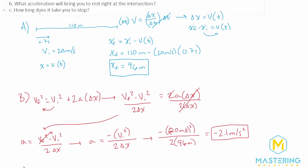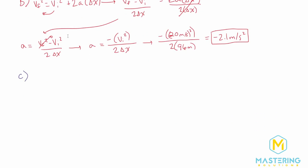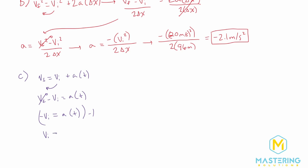For Part C, they ask how long does it take you to stop. We'll use the kinematic equation v_final equals v_initial plus acceleration times time. Moving v_initial over gives v_final minus v_initial equals acceleration times time. Since v_final is zero, we have negative v_initial equals acceleration times time. Multiplying everything by negative one gives v_initial equals negative acceleration times time.